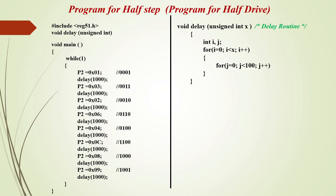For the half step program, the same structure is used with a while loop. The sequence for the 8 half steps is 1, 3, 2, 6, 4, C (12), 8, and 9, sent to port 2 with a delay between steps to rotate the motor in half step mode.